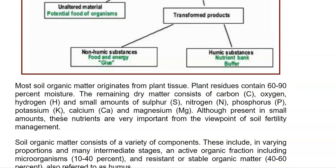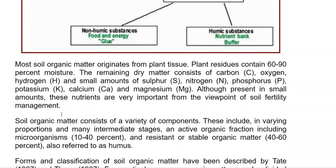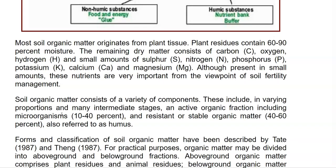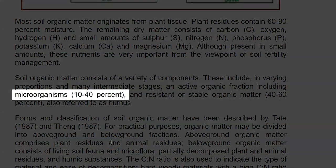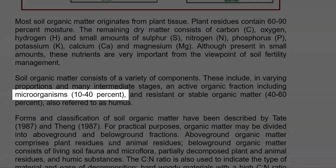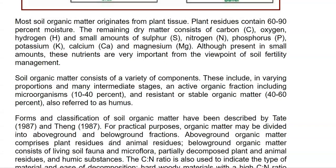The dry matter consists of various nutrients including carbon, oxygen, hydrogen, and small amounts of sulfur, nitrogen, phosphorus, and other elements such as calcium, potassium and magnesium. These constituents play a major role in the soil fertility management. In the soil organic matter, 10 to 40% would be comprising of the naturally occurring microorganisms. They also serve as an active organic fraction of the soil organic matter.